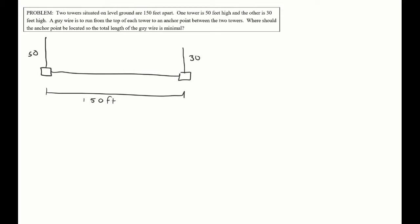A guy wire is to run from the top of each tower. A guy wire is just those wires at the top of tall towers that go to the ground to anchor it and hold it steady. It's to run from the top of each tower to an anchor point between the two towers. Where should the anchor point be so that the total length of the guy wire is minimal?